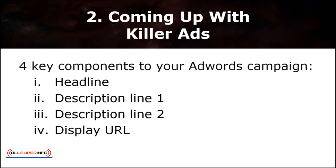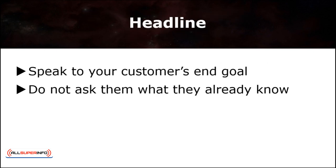There are four key components to your AdWords campaign: one, Headline; two, Description Line 1; three, Description Line 2; four, Display URL. Bear in mind that these components will either make you or break you. The headline should be your main focus, as it is what your prospects will be reading first. AdWords will only allow a maximum of 25 characters per headline, so make every precious character count.